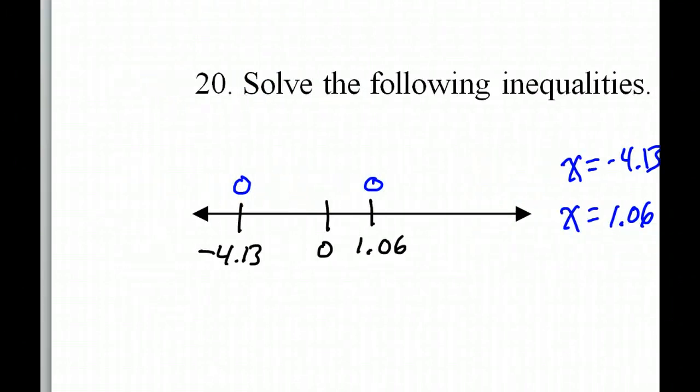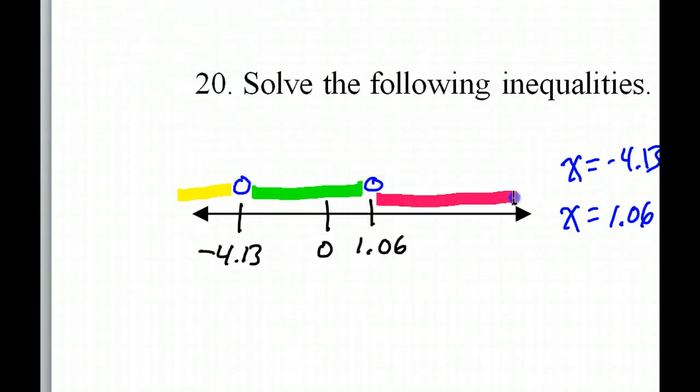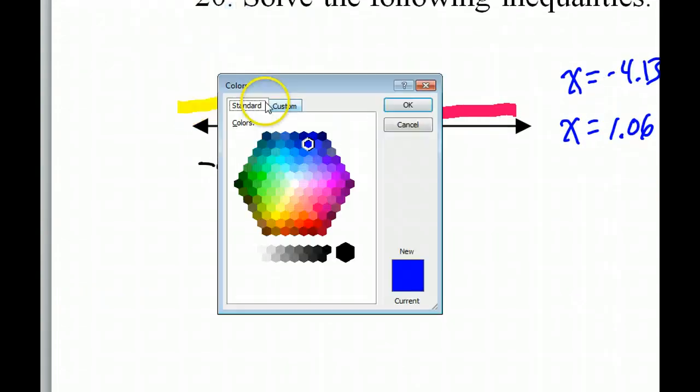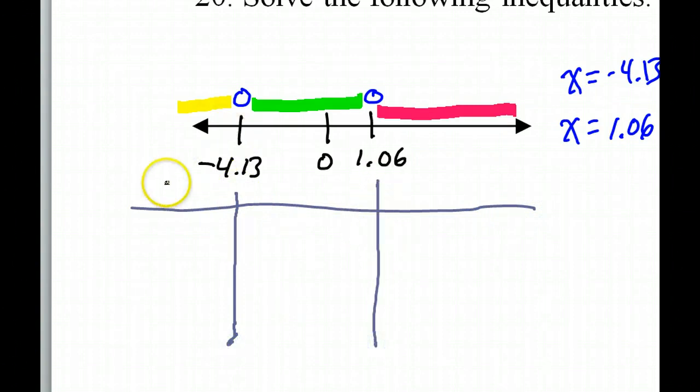So these two zeros separate the number line into three zones. We've got the yellow zone, and we've got the green zone, and we've got the pink zone. All right, so I'm going to need a test value from each one of these zones. From the yellow zone, I think I'll do negative 5. From the green zone, I'll choose 0. And from the red zone, I'll choose 2. So I'm going to check each one of these values.